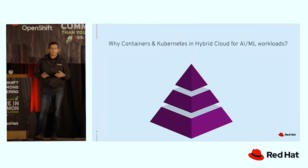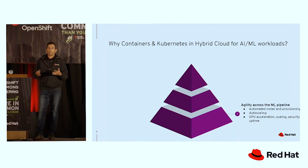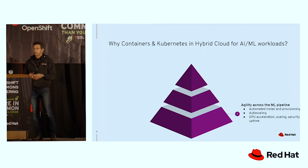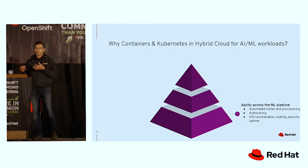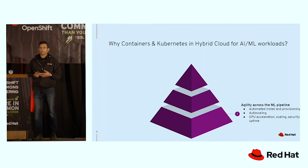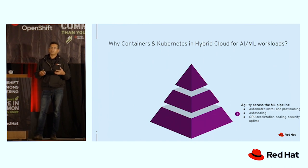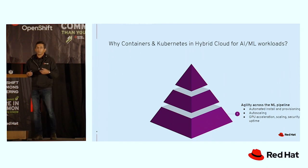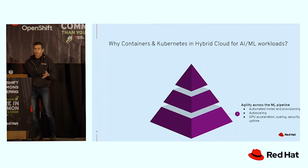We're going to talk about why containers and Kubernetes for hybrid cloud and AI/ML workloads. First is the agility — automation for the platform and the model framework that data scientists use. With auto-scaling, data scientists don't have to rely on IT folks to provision infrastructure. Training and testing are very compute-intensive, so GPU acceleration, security feature integration, and uptime are all key value-adds for ML workloads.